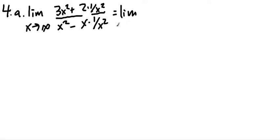And this gives us the limit as x goes to infinity of, why x squared? Because that's the biggest power I see floating around, period. So that leaves me with three plus two over x squared, all over one minus one over x.